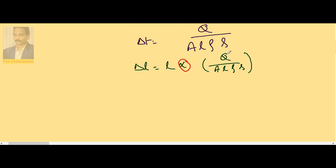Alpha is same, rho is same, S is same, amount of heat given is also same, and this L and L get cancelled.